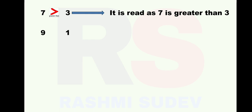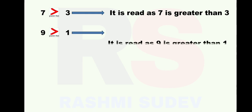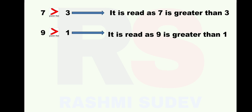Next: 9 and 1. Again, 9 is the greater number and 1 is the smaller number. 9 is written before 1. So which sign are you going to put here? Greater than sign. Why? Because 9 is the greater number. Therefore, it is read as: 9 is greater than 1.